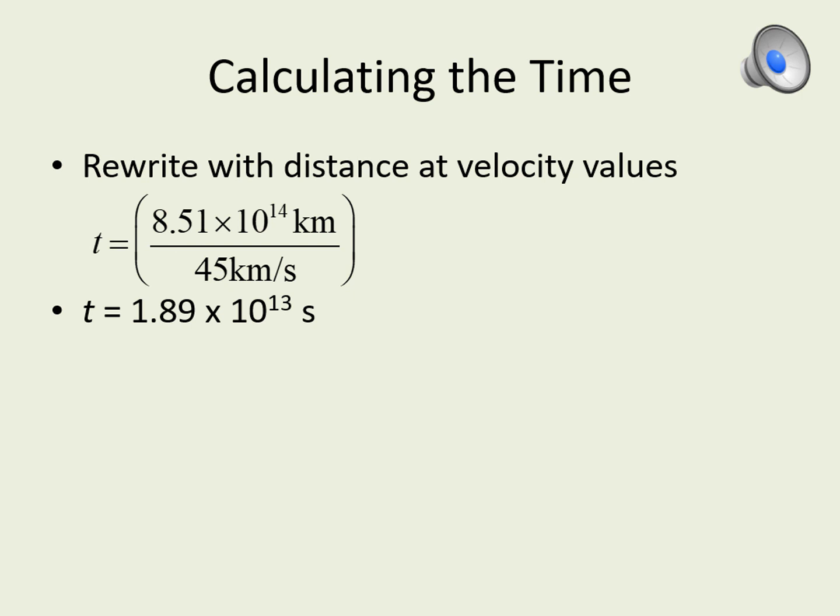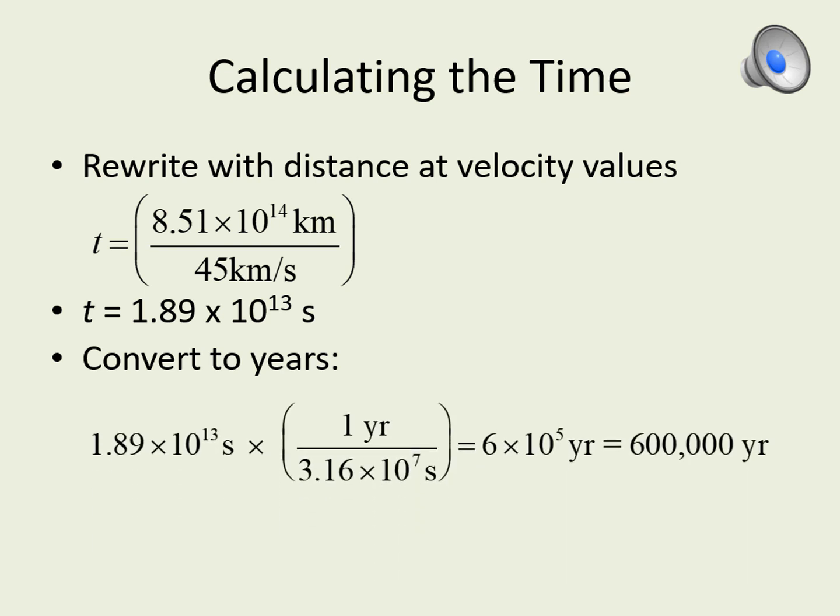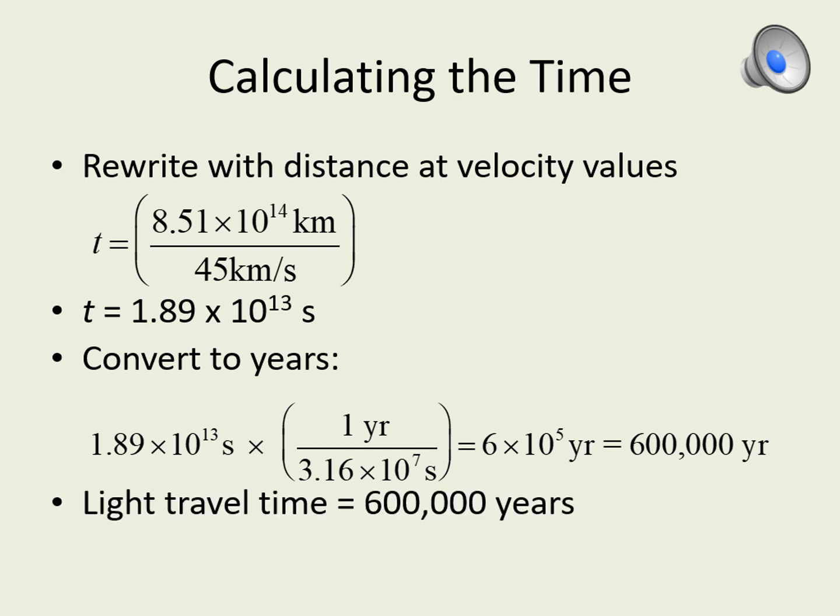You probably don't have much idea of how long 10 to the 13th seconds is — I certainly don't — so we should convert that into the number of years so we can get a better sense of what this time really means. Here's where we use the number of seconds in a year, about 3.16 times 10 to the 7th, to make the conversion to years. Just make a fraction the same way as before, this time with the seconds on the bottom and the years on the top. When we do this conversion we get an answer of about 6 times 10 to the 5 years, or 600,000 years. So it would take more than half a million years to travel to this star.